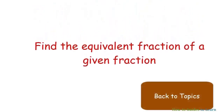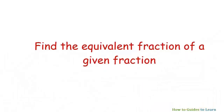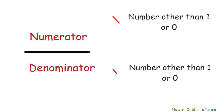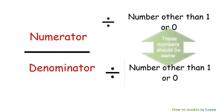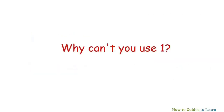To find the equivalent fraction of any given fraction, you just have to multiply or divide the numerator and the denominator of the given fraction by any whole number other than one. Why can't you use one? Multiplying or dividing a number by one is going to give the same number.